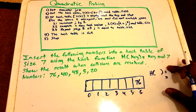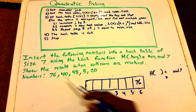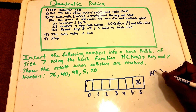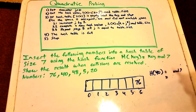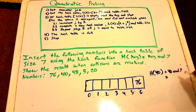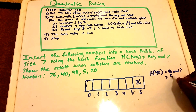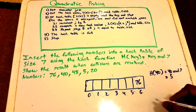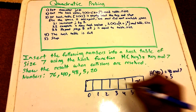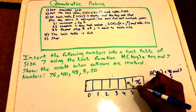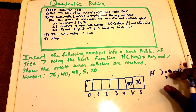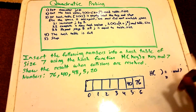Next up we insert 40. We put that into our hash function: 40 mod 7, which gives us the value 5. So at index 5 we put the value 40.